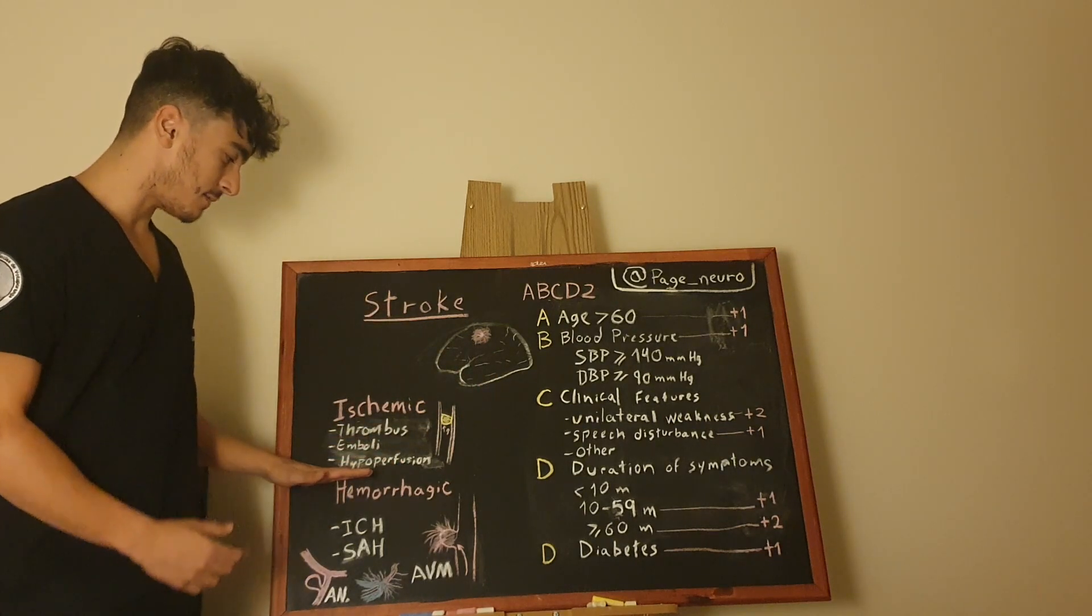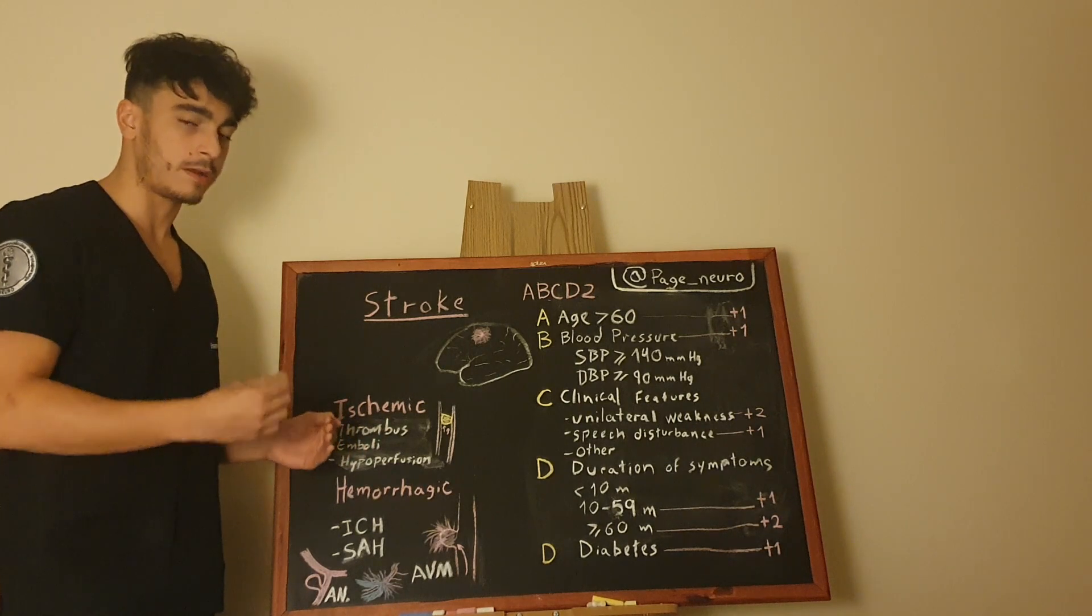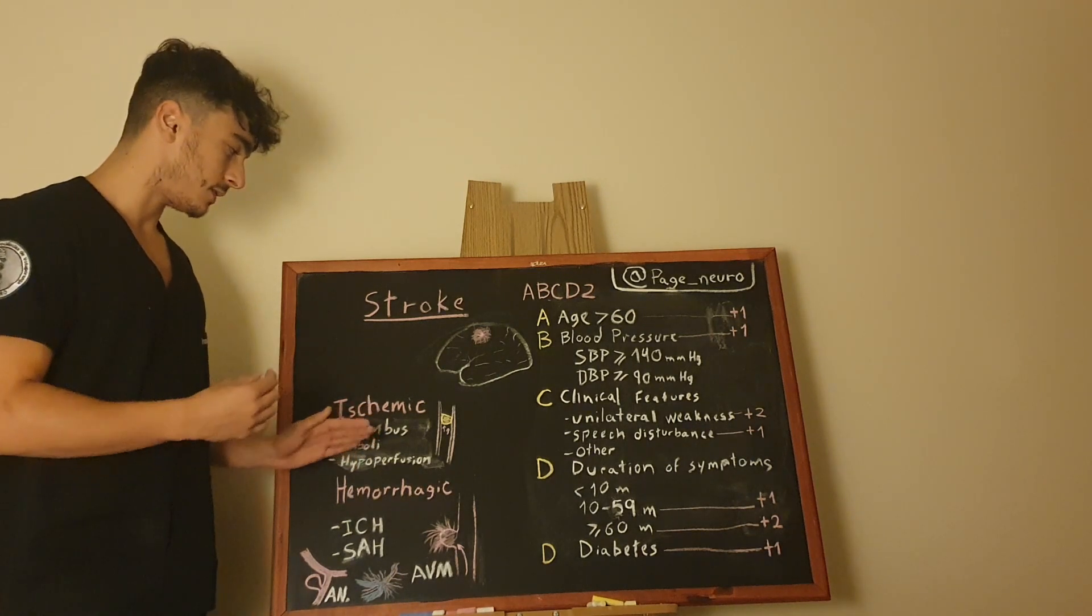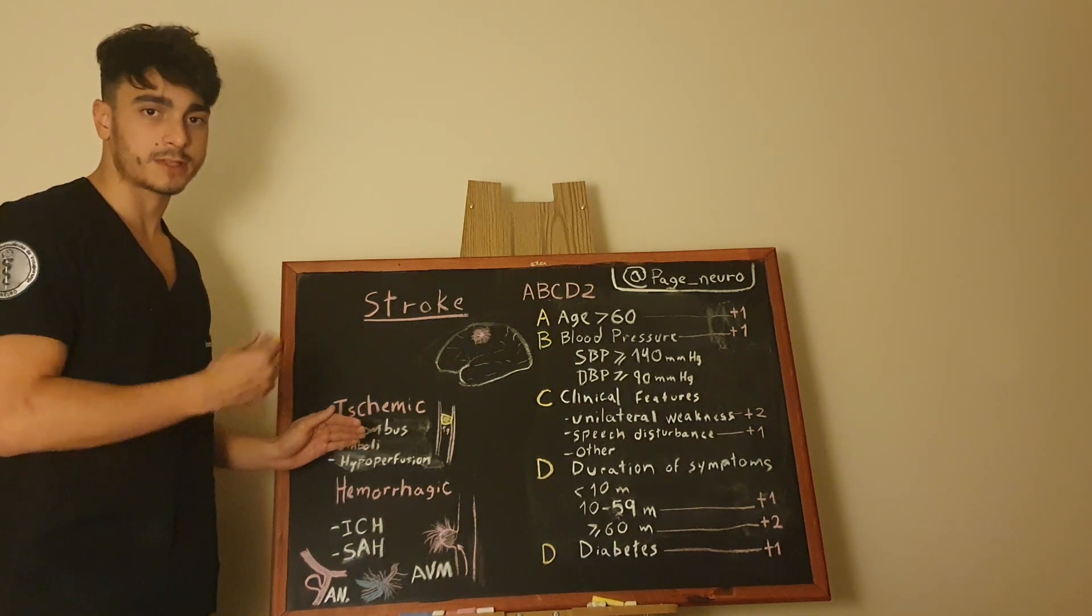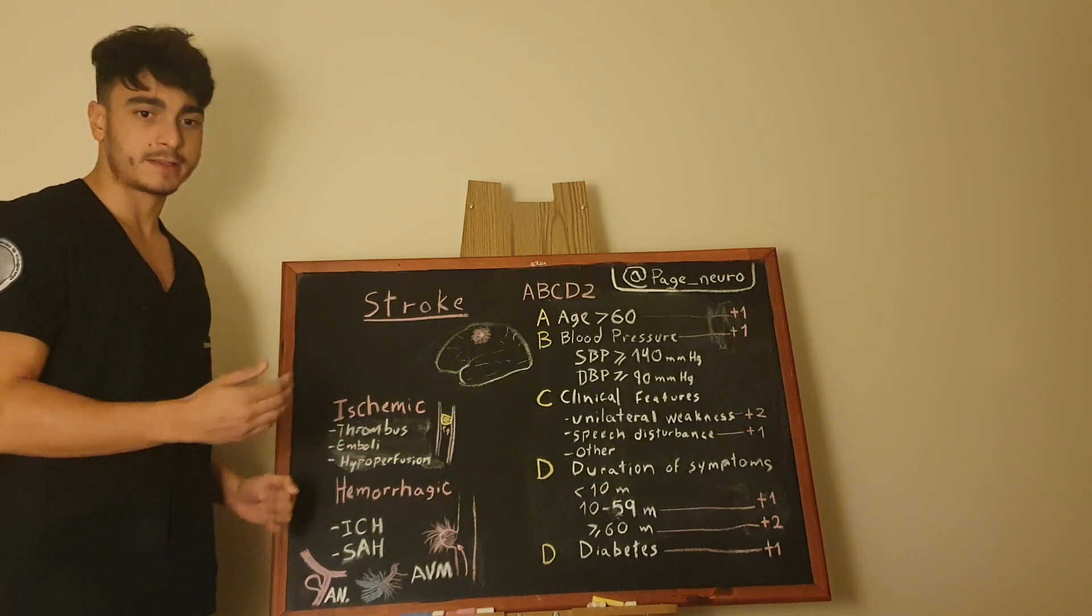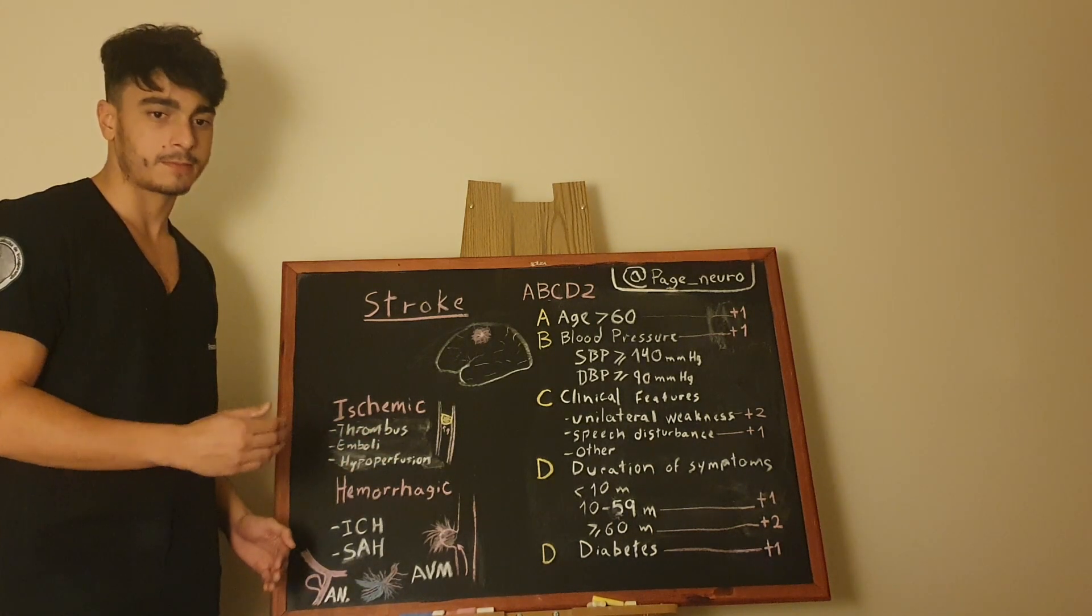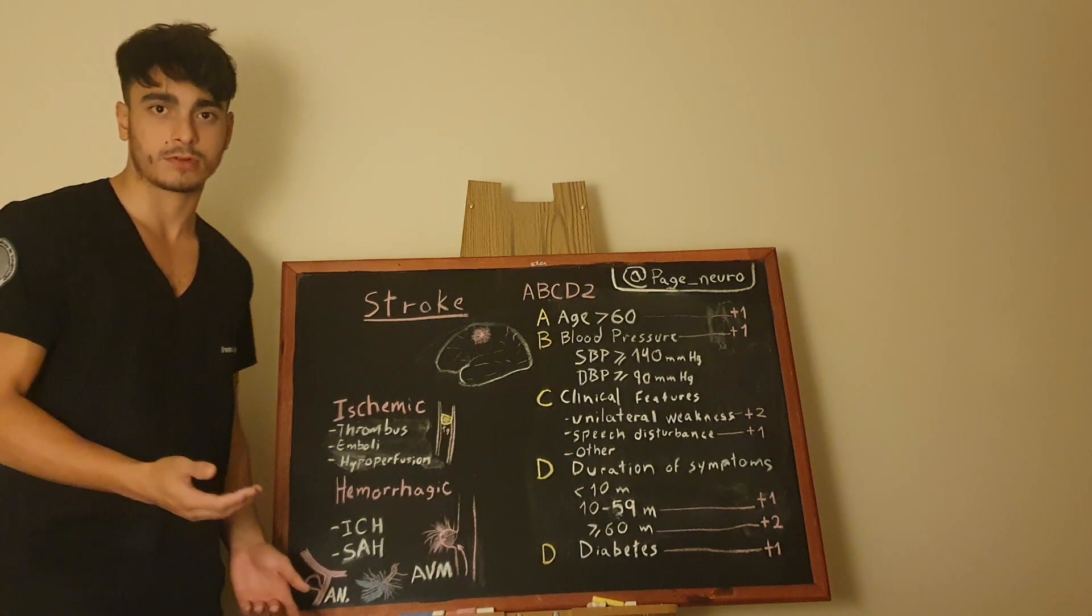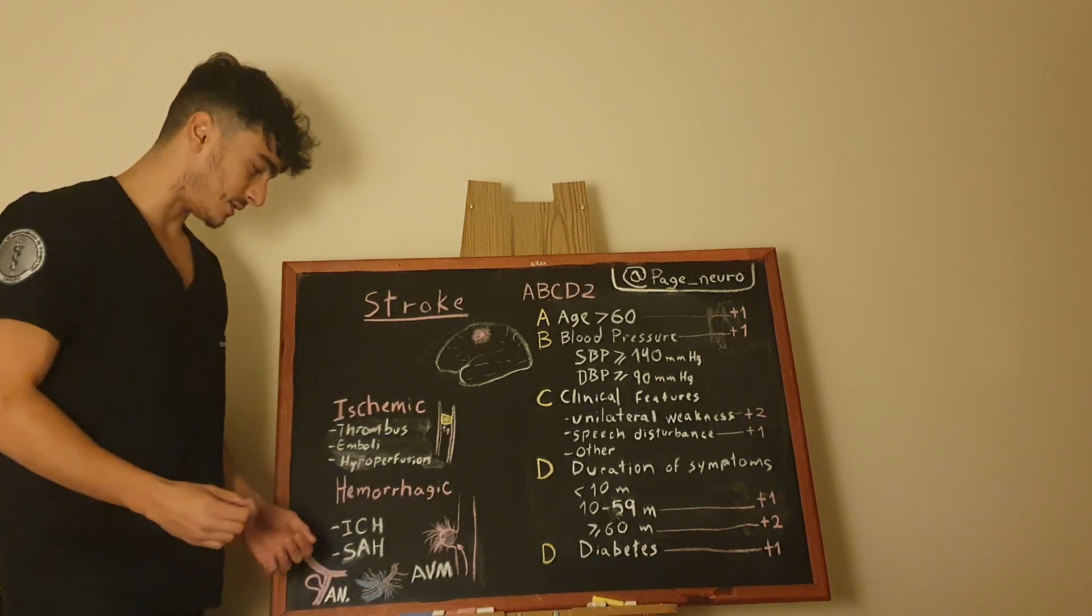And talking about hypoperfusion, it's another subtype of ischemic stroke, but it's usually due to a massive hypotension due to a cardiovascular or even a central issue that the patient is facing.